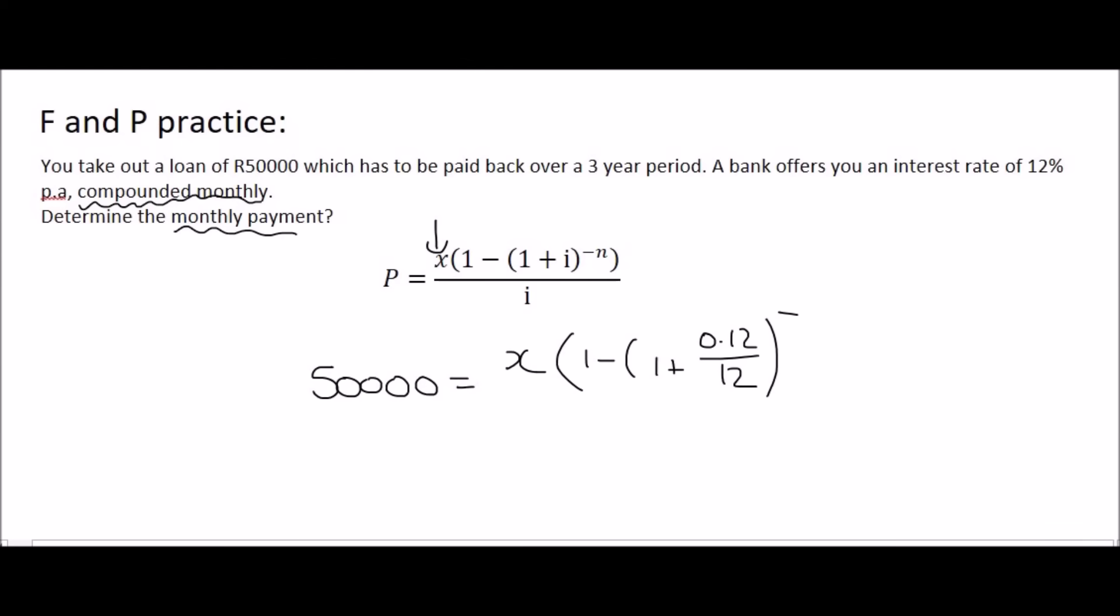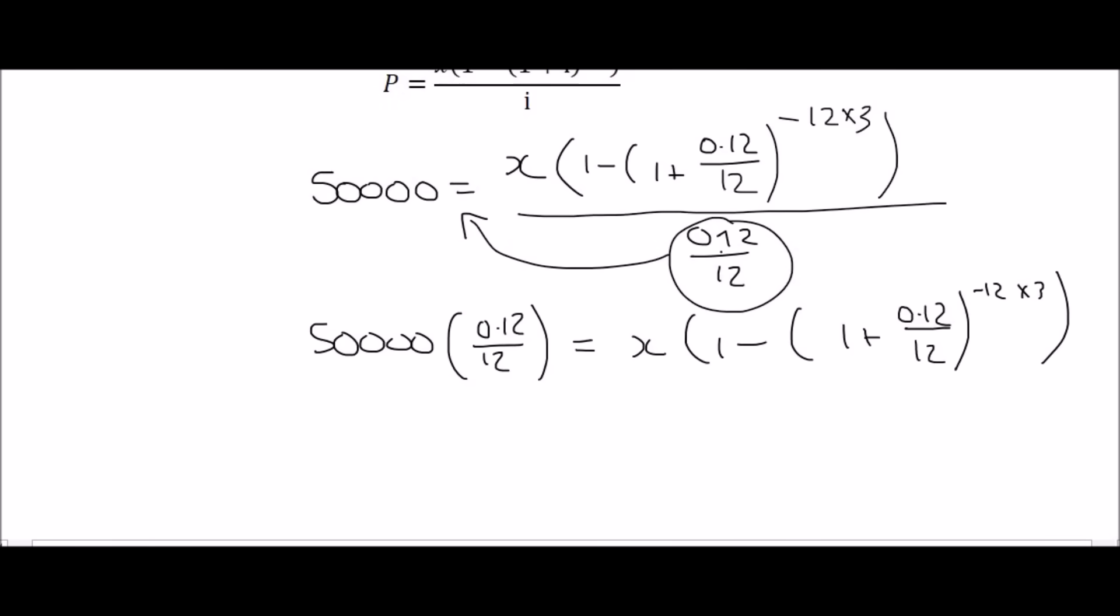Then the N is your number of payments. Well, we're going to be paying the loan back in 3 years on a month-by-month basis. And so that's going to be 36 months, because that's 12 times 3. Then the interest, once again, is 0.12 over 12. Now we just have to get X by itself. So once again, you could take this part to the left. And then we can divide the 50,000 times 0.12 over 12. We can divide it by this whole big term next to the X, like that, because now we have X alone. And then you can just go type this all in on the calculator, and you should get a final monthly payment value of 1,660 rand and 72 cents.